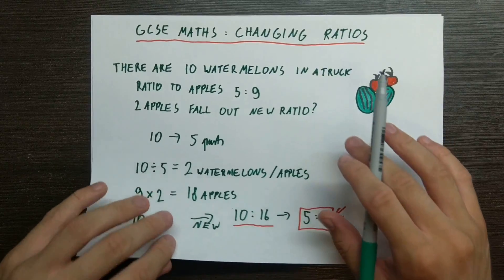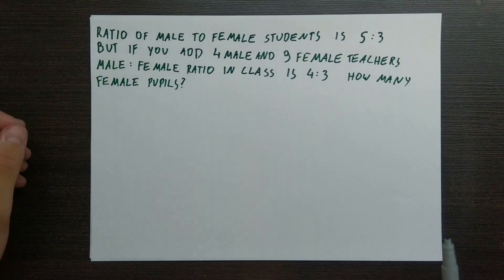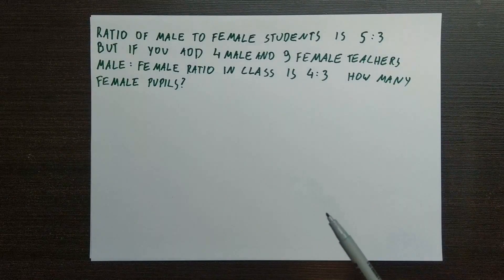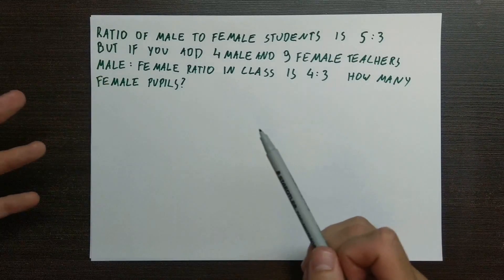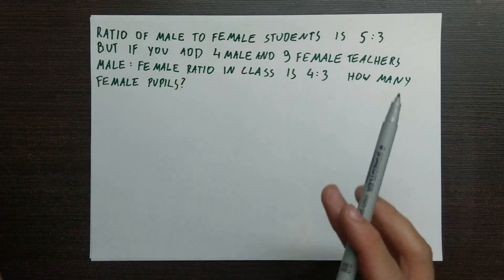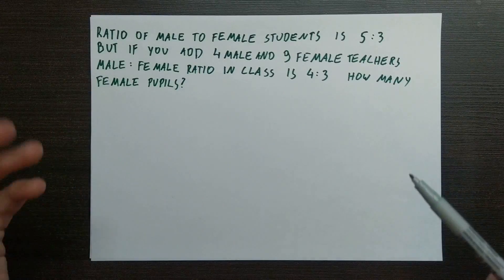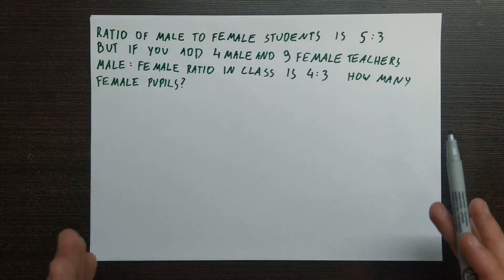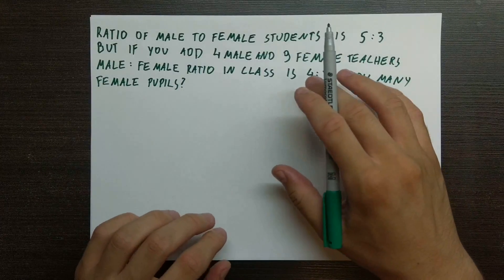This was fairly simple. The next thing I'm going to show you is slightly more complex, because we're going to use the new ratio to find out the actual original number of people. Don't worry, I will explain it — bear with me. If you find it complex, don't be afraid to go back in the video and go over it again.